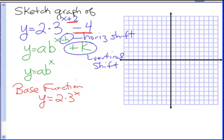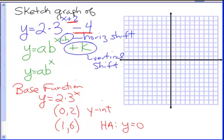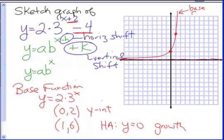From the last tutorial, we can immediately find that our y-intercept is at (0, 2). If I pick x equals 1 and calculate, I get 2 times 3 to the first, which is 6. We have a horizontal asymptote of y equals 0. Since b is 3, which is bigger than 1, we have exponential growth. Given those factors, we can quickly sketch our base function through (0, 2) and (1, 6) with the horizontal asymptote — but this is our base function, not the one we were asked to graph.